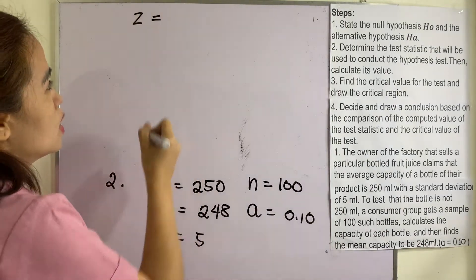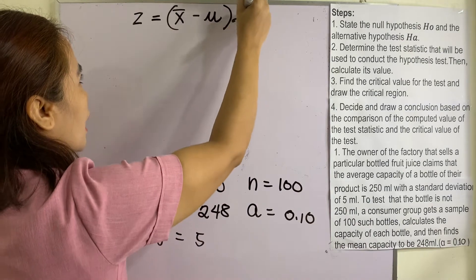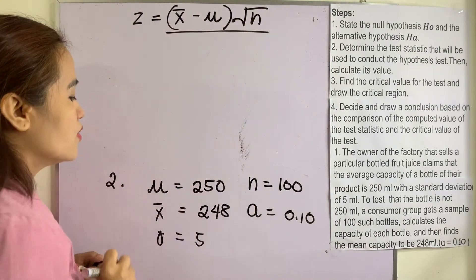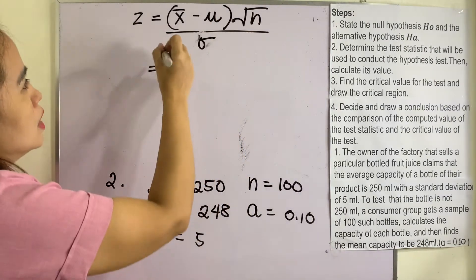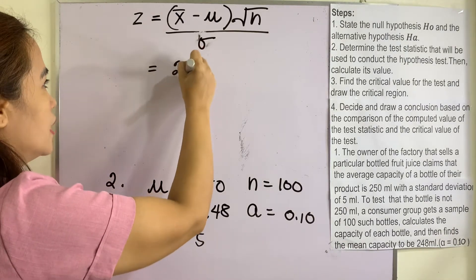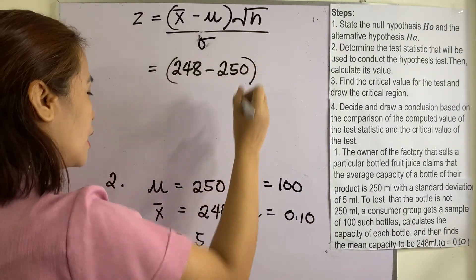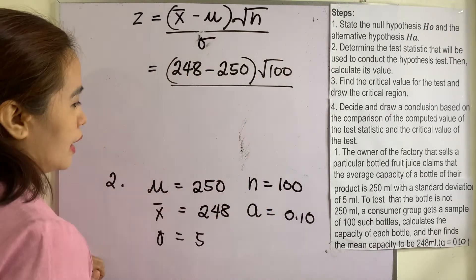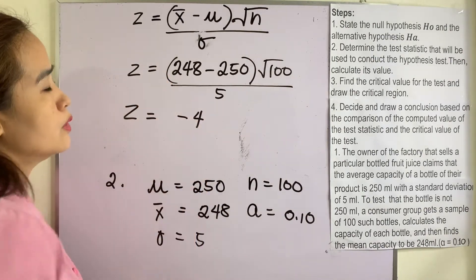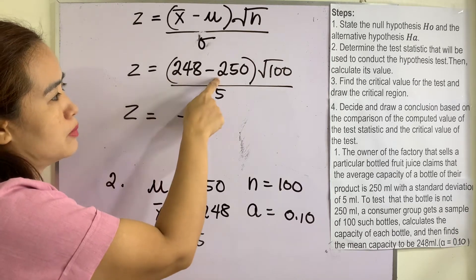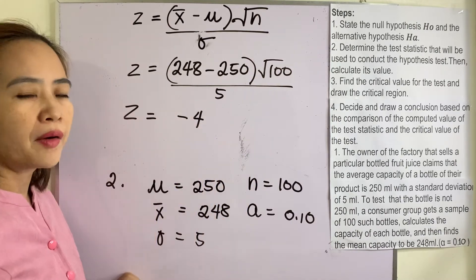The formula is: Z equals x-bar minus the population mean, multiplied by square root of n, divided by the standard deviation of the population. Substituting the given: Z equals 248 minus 250, times square root of 100, divided by 5. The value of Z is equal to negative 4. You subtract 248 by 250, multiply by square root of 100, then divide by 5, and you get negative 4.